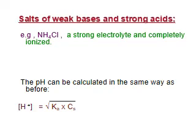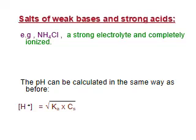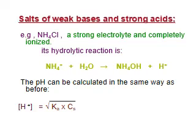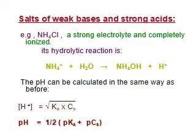Now we will discuss the pH calculation of salts of weak bases and strong acids. For example, ammonium chloride — this salt is formed from the reaction between ammonium hydroxide, a weak base, and hydrochloric acid, a strong acid. Ammonium chloride is a strong electrolyte and completely ionized. Its hydrolytic reaction is: ammonium plus water gives ammonium hydroxide plus the release of hydrogen ions. The molar concentration of H⁺ equals the square root of Ka times Cs, and pH equals half pKa plus pCs.